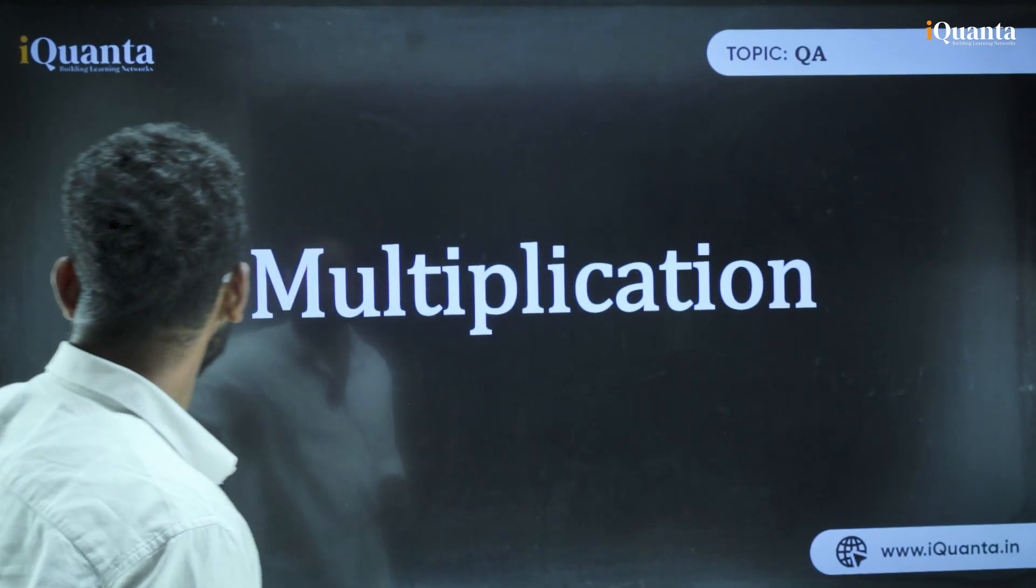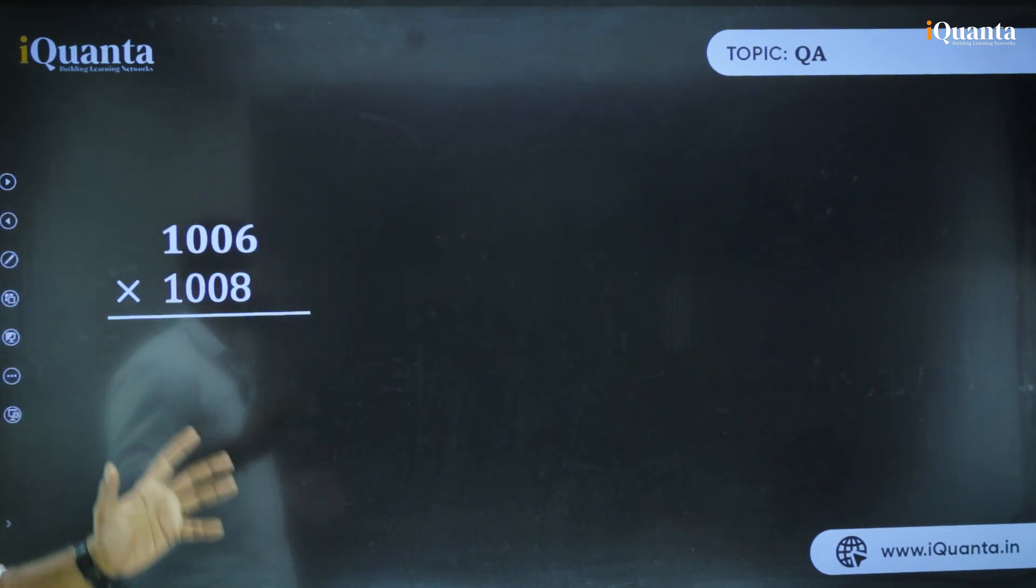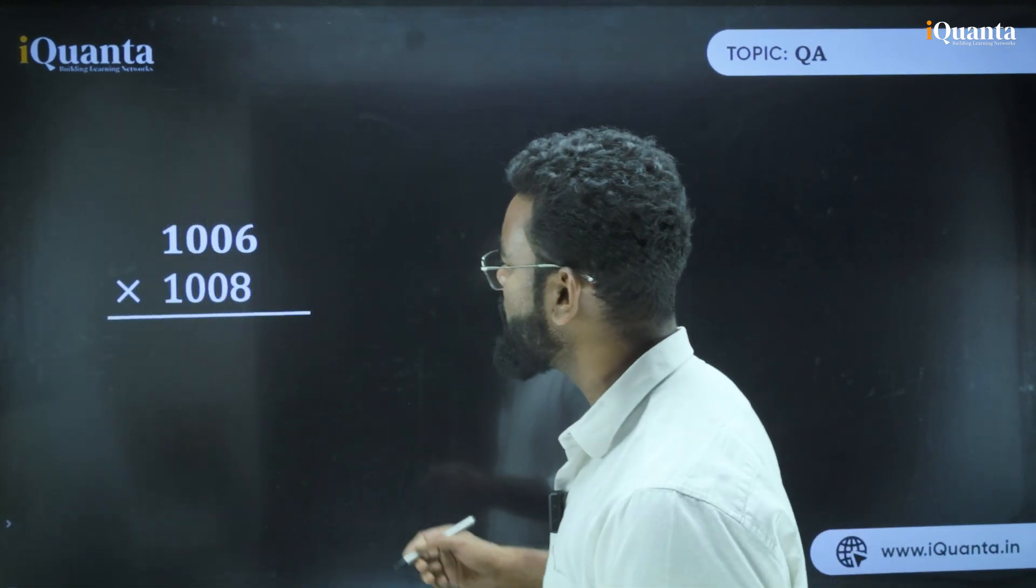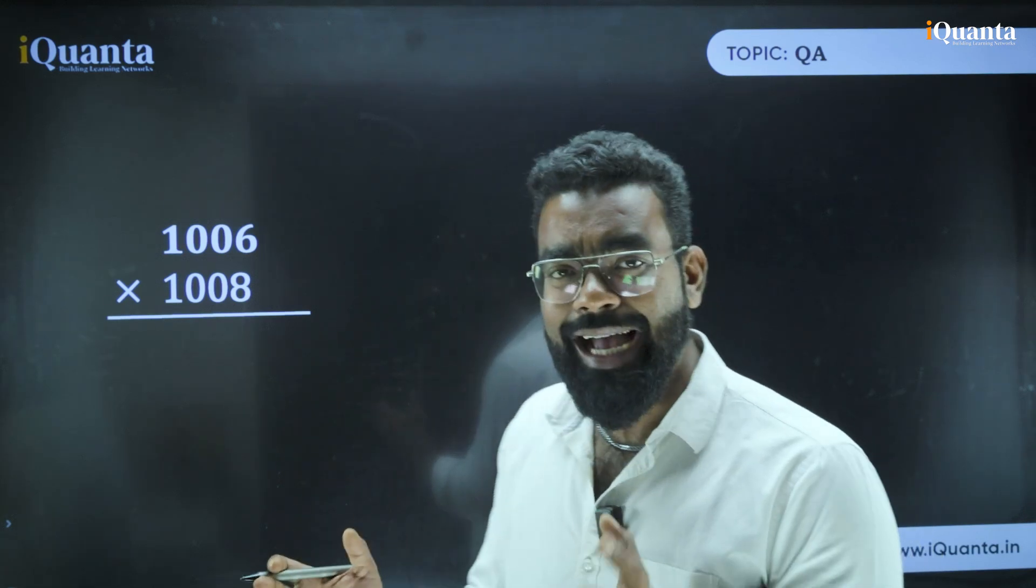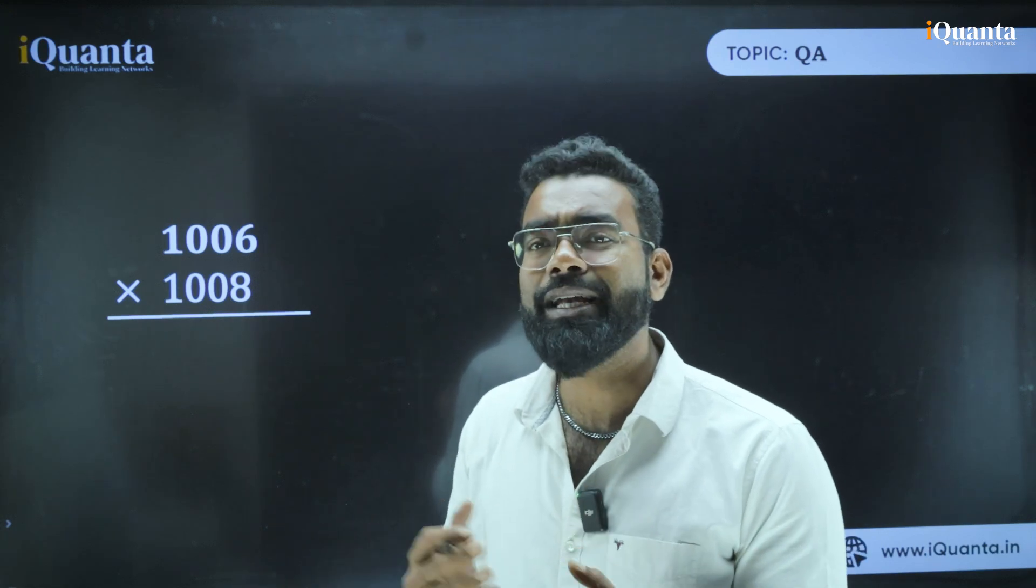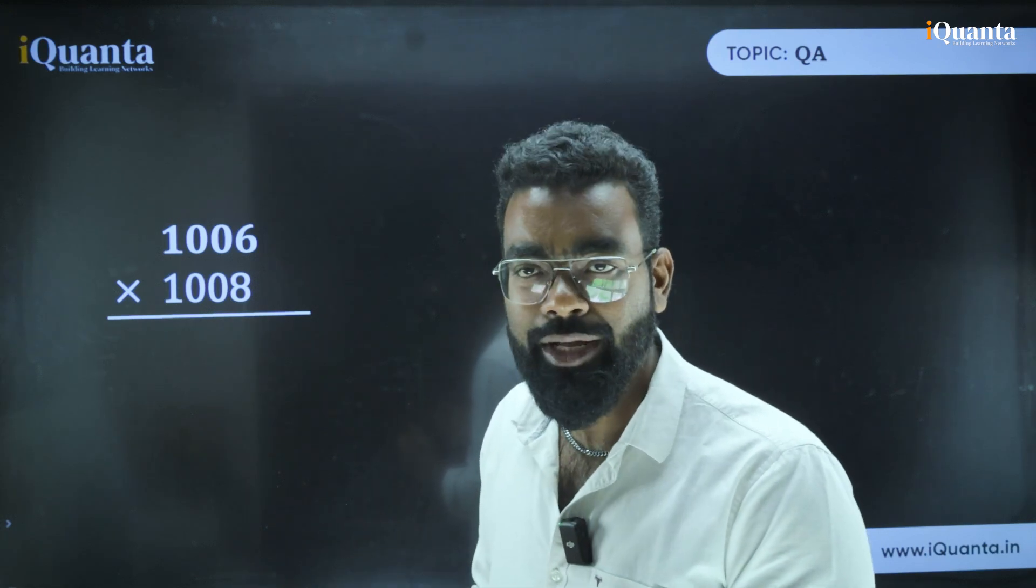The first thing we're going to start with is numbers which are close to 1000. When it is close to 1000, the first thing you need to understand is it's exactly the same as 100. Just there is one extra step we are going to use here.